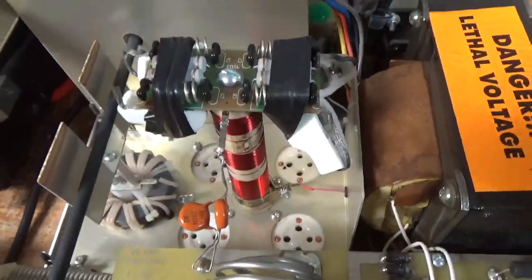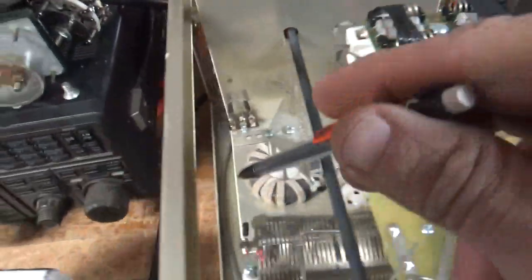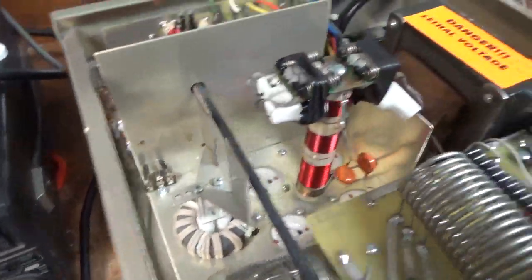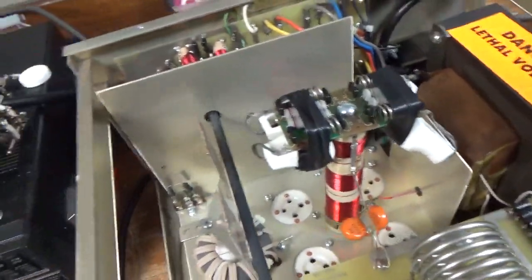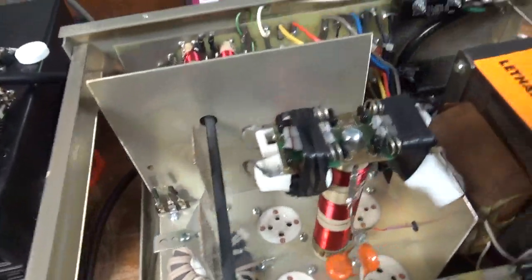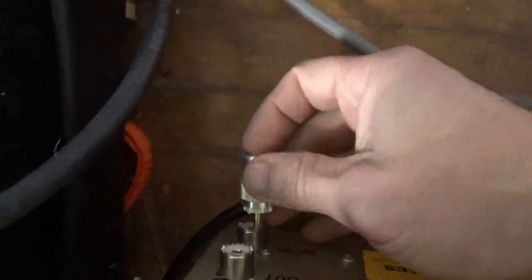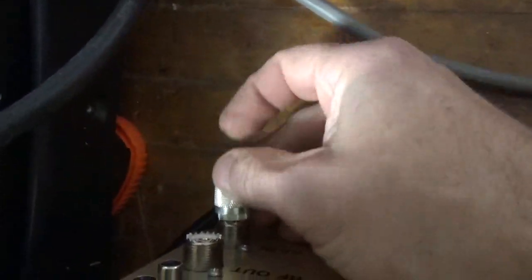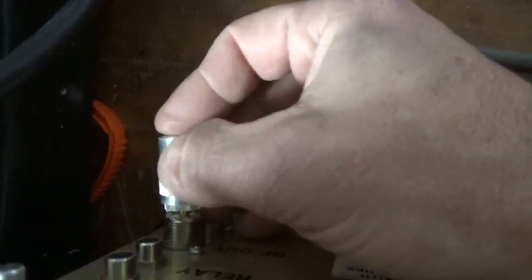I will remove the metal oxide varisters. This one does not have the grids grounded, so I will ground the grids directly to the metal like I've shown many times before. Needs new SO239 connectors, these ones just slip right in and out, so I'll replace those.